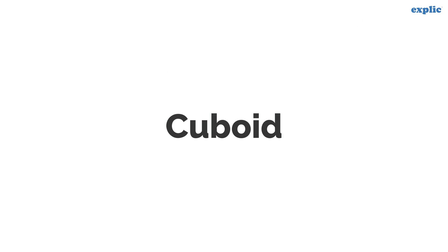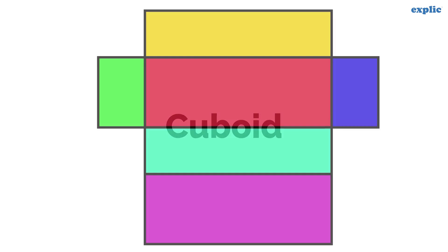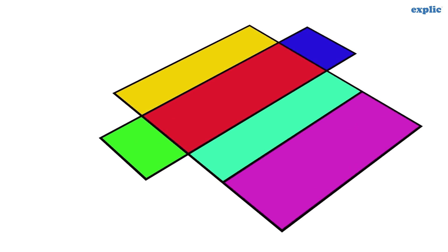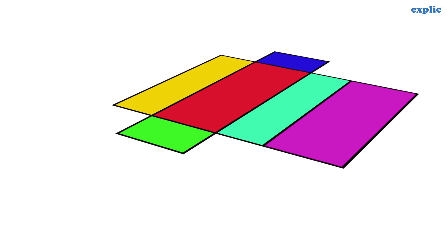Let's learn about some important three dimensional shapes. As we learned already, a cuboid is a shape made of six rectangles. It has six faces, twelve edges and eight vertices.